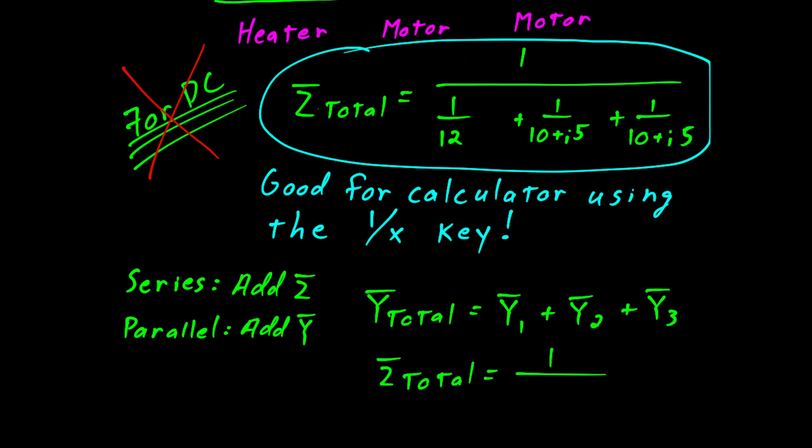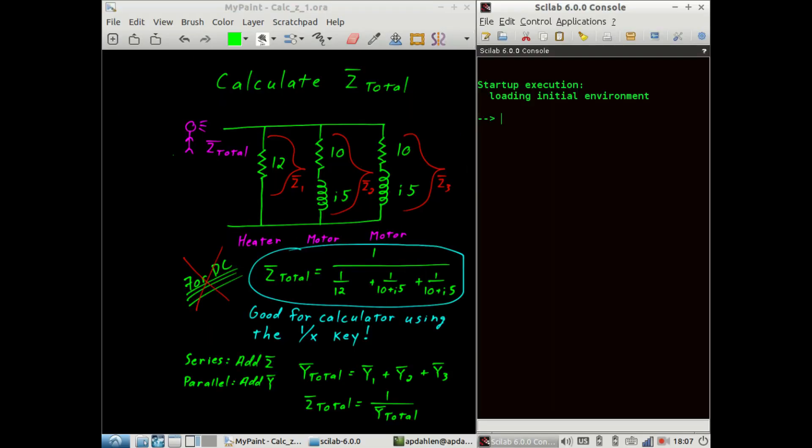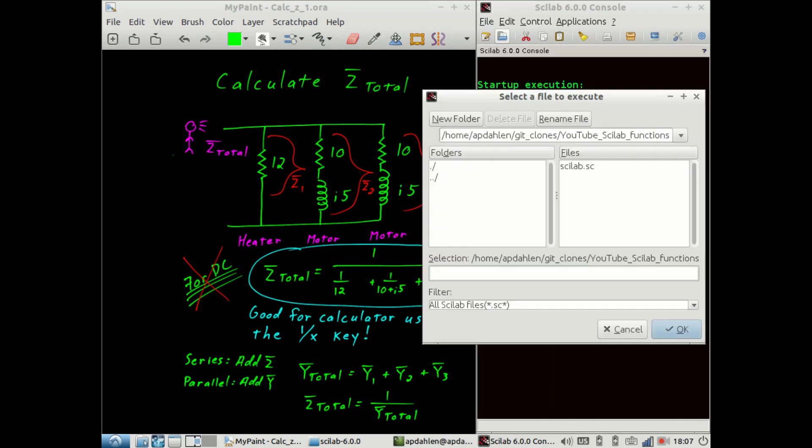When we have the total admittance, we can calculate the total impedance by taking the reciprocal. At this point, we're going to launch Scilab to perform the calculations for us.